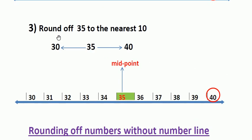Next, round off 35 to the nearest ten. The first step is to find in between which tens the number 35 lies. 35 lies between 30 and 40, and here 35 itself is the midpoint. Here 30 is the smaller ten and 40 is the bigger ten. Since 35 is the midpoint, we round it off to the bigger ten. So we round off 35 to 40.